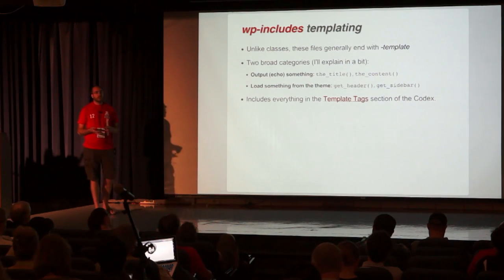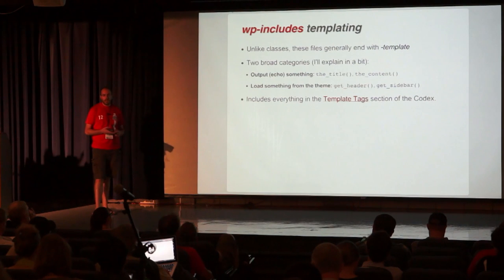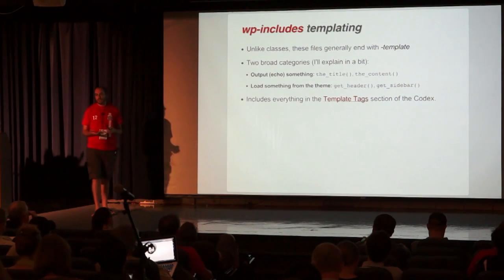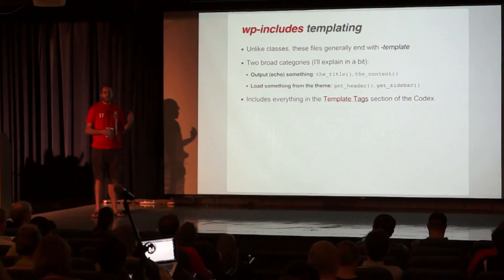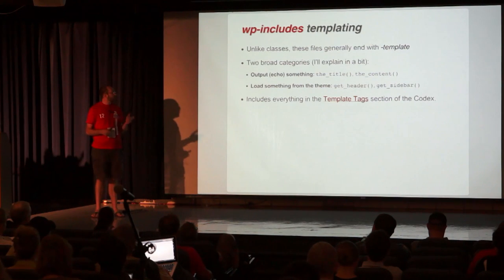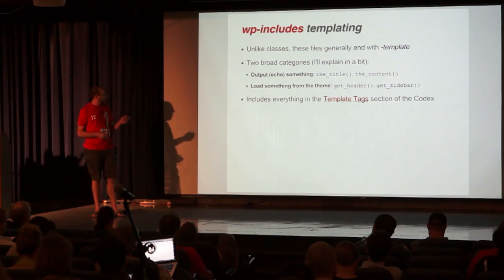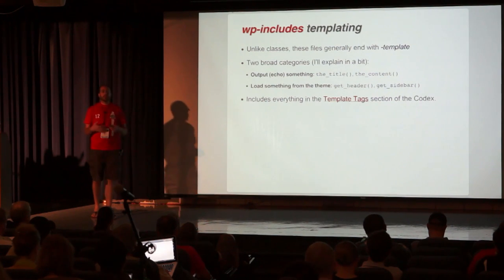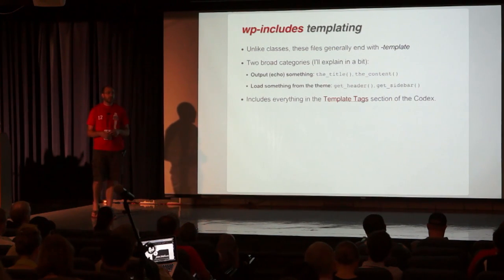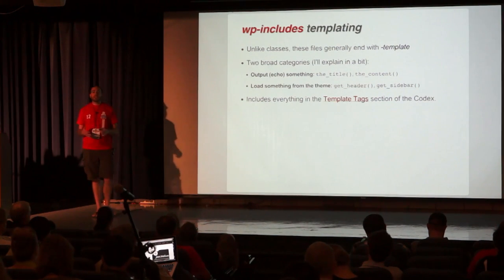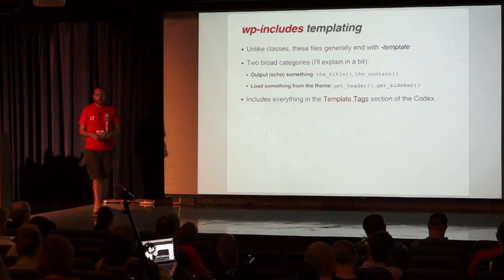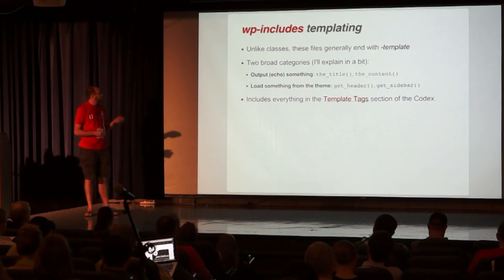The next broad class is the templating functions — more or less anything related to displaying your content to the user: the content, the title, the post thumbnail, things along these lines. By and large, the functions in here start with 'the_'. It's a really nice convention that WordPress has where, if it echoes or outputs its data directly to the browser, it starts with 'the_'. And you'll find it in one of the templating files.